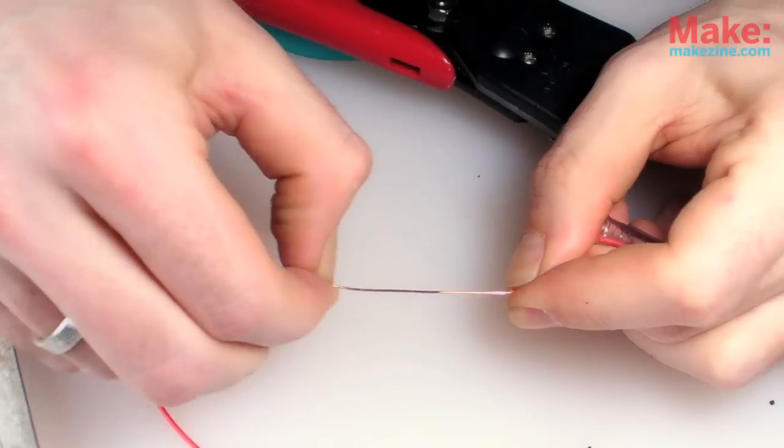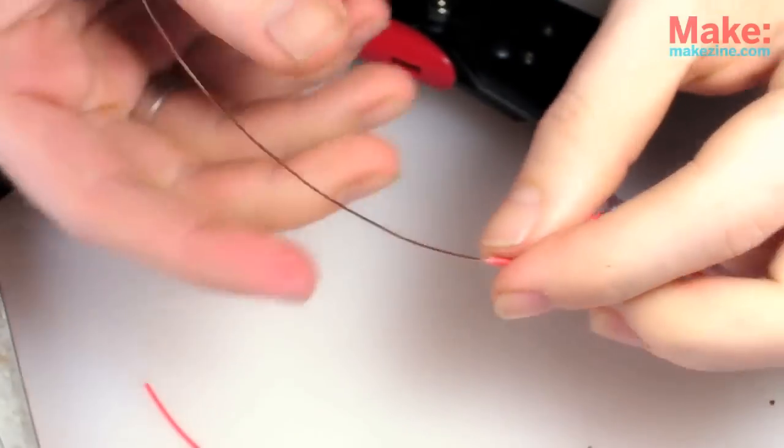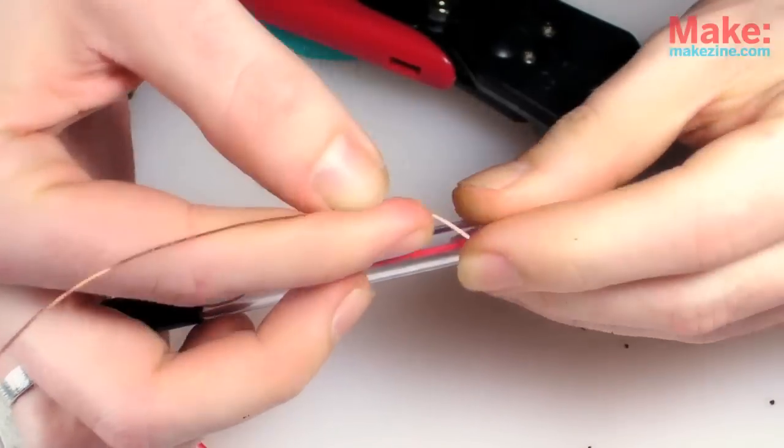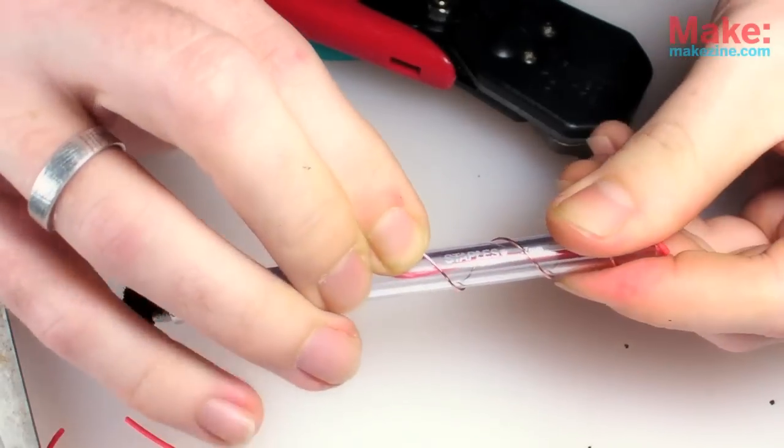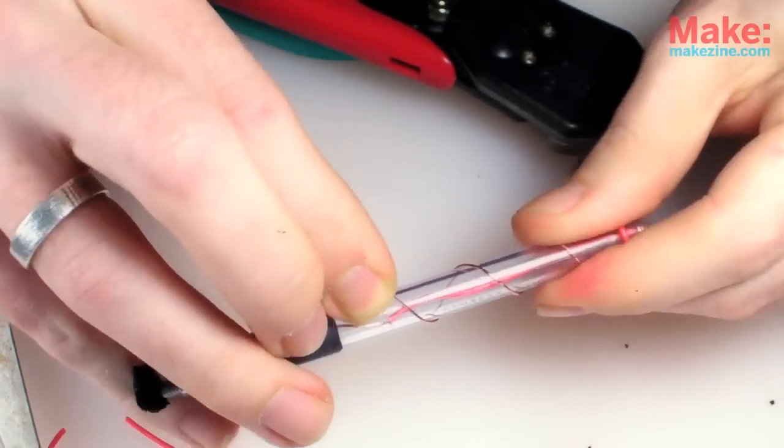Then just strip the rest of the wire and wrap it around the outside of the barrel so that it makes contact with my hand when I use it.